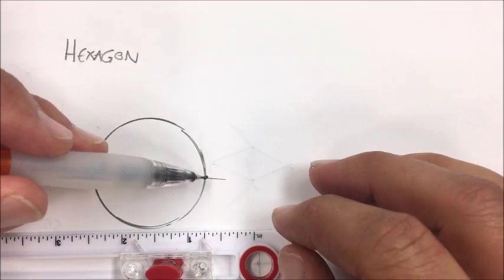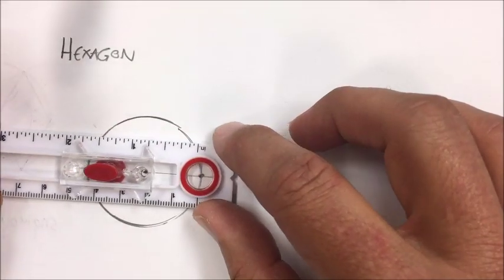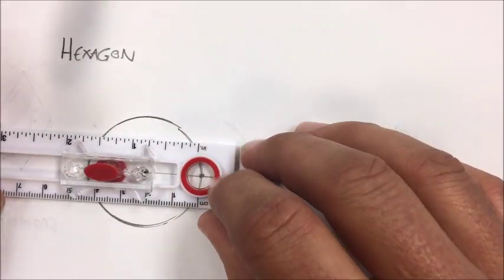So now what I'm going to do is make circles off of each of these with this fixed compass, the same distance right here. So do a circle here.